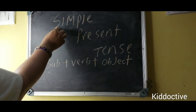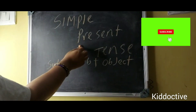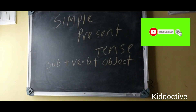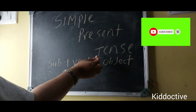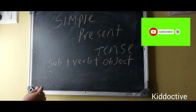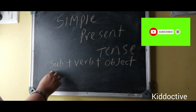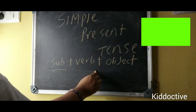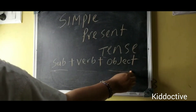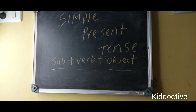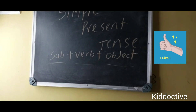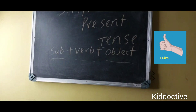Today we are going to learn simple present tense. In simple present tense, the rule is subject plus verb plus object. Let's start the video.